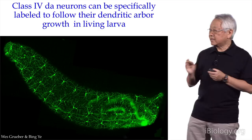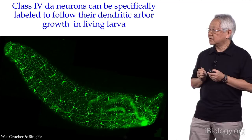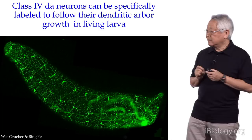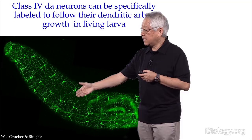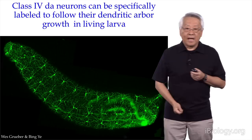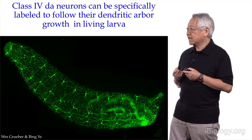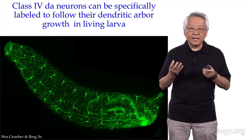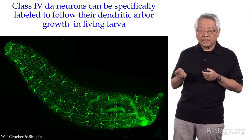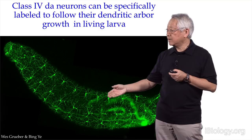Those neurons are called class 4 DA neurons, and this is the subject of our study. You can see those really beautiful dendrites, and this is a living, behaving animal. This is a very useful tool because it allows us to observe the development of dendrites in real time in living animals. Moreover, this allows us to do experimental manipulation — for instance, ablate one of those neurons and look at the consequences, as I'll show later.